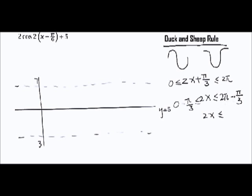Then we divide both sides by 2, giving us -π/6 < x < 5π/6. This is our new period range.